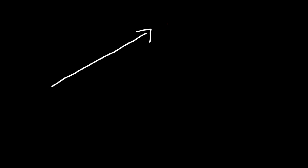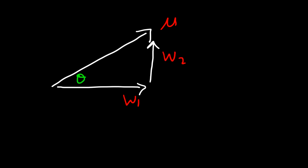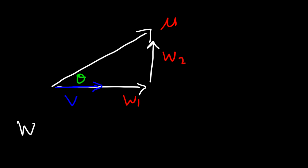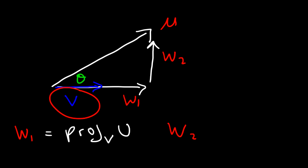Let's redraw the picture a different way. So once again this is going to be vector u, and we're going to break it up into two components. Let's call this w1 and this one w2, and here we have the angle theta. Now we're going to say this is vector v — it's not as long as w1 but notice that it's parallel to it, which means it's perpendicular to w2. What you need to know is that w1, a component of vector u, is the projection of vector u onto vector v, because w1 is the component of vector u that travels along vector v.